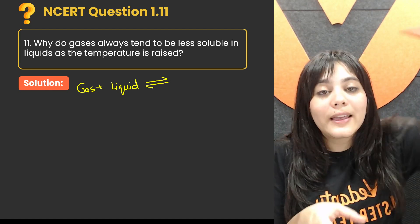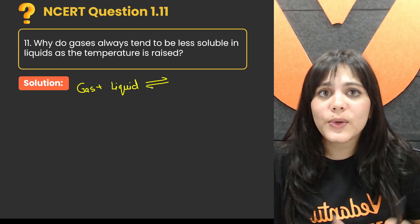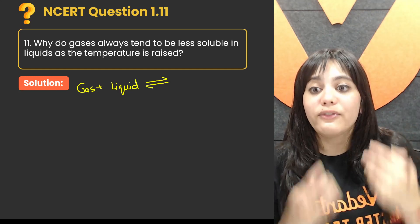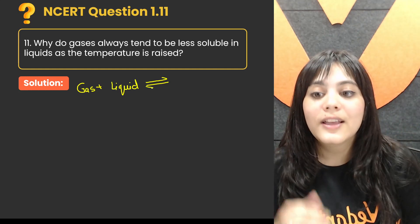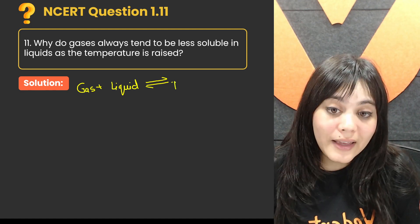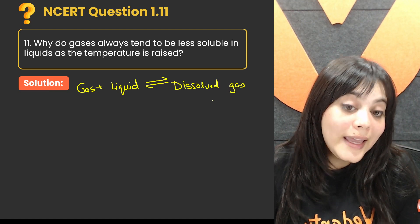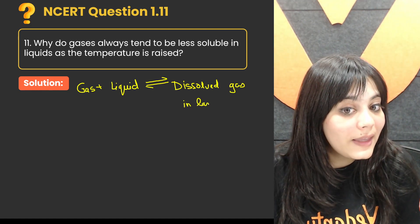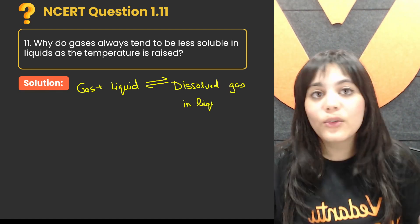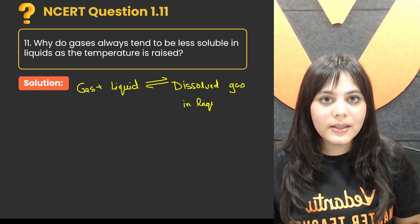what do we do in coke? We add CO2, which is a gas. So this is a very good example to visualize. Gas plus liquid gives dissolved gas. When I add gas in liquid, it will be dissolved gas in the solution.